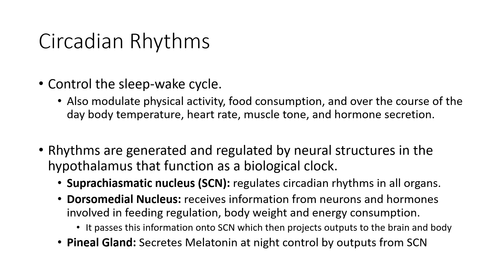Circadian rhythms regulate pretty much everything in your body: physical activity, food consumption, body temperature — which changes during the day and during sleep — heart rate, muscle tone, and hormone secretion. These rhythms are generated by neural structures in the hypothalamus, which is linked to many automatic processes within our body. These neural structures create what we call the biological clock. There are three main locations involved with sleep: the suprachiasmatic nucleus, or SCN, which regulates pretty much all circadian rhythms including sleep; the dorsal medial nucleus; and the pineal gland.